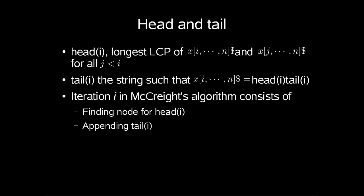Let head(i) denote the longest common prefix of x[i...n] followed by dollar and x[j...n] followed by dollar, for all j less than i. Let tail(i) be the string such that x[i...n] followed by dollar is head(i) followed by tail(i). Iteration i in McCreight's algorithm consists of finding or inserting the node for head(i) and appending tail(i). The trick in McCreight's algorithm is a clever way of finding head(i).